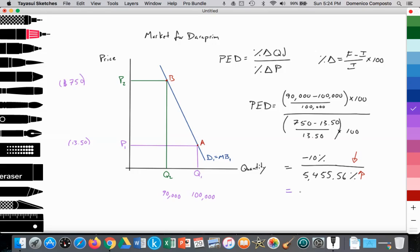right? So quantity demanded is falling, but the price is rising, and that gives us an inelastic demand curve that's approximately 0.0018. So PED,